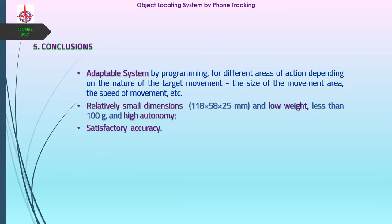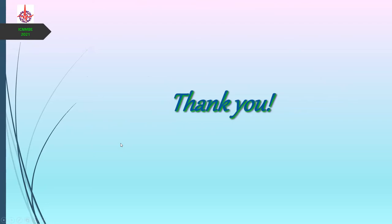In conclusion, the main objective of the study was to create a programmable system for locating and tracking an object or a person, which ensures the transmission of information about the target position through mobile networks. The presented system ensures high adaptability to various types of users by programming the system for different areas of action depending on the nature of the target movement, the size of the movement area, and the speed of movement. It has relatively small dimensions, weighs less than 100 grams, and has high autonomy when connected to an external battery, making location possible with satisfactory accuracy.